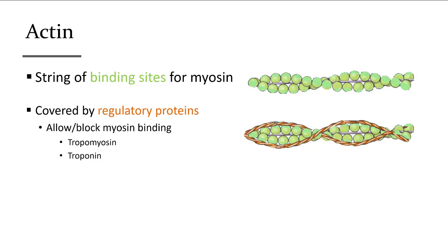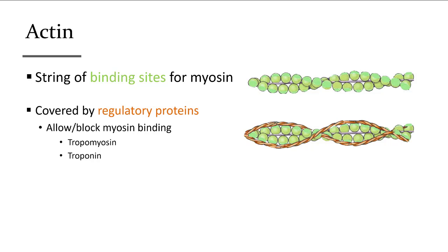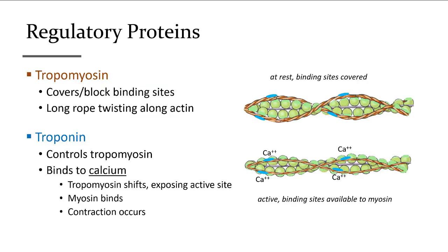This process is controlled by two regulatory proteins: troponin and tropomyosin. Tropomyosin looks like a rope wrapping around the actin beads, covering up the binding sites and preventing myosin attachment when the muscle is at rest. Troponin — shown in blue — consists of small proteins placed about every seven actin molecules, hooked on top of tropomyosin, and acts as the controller.